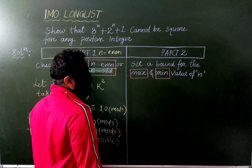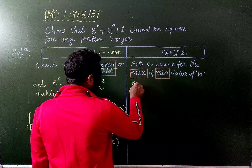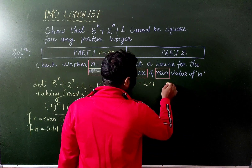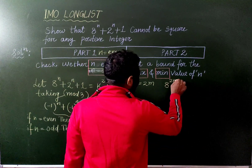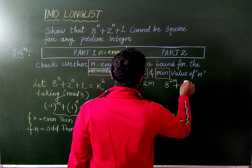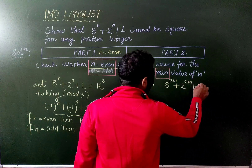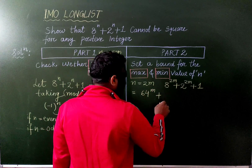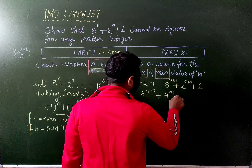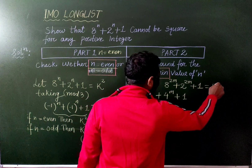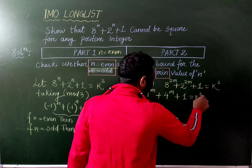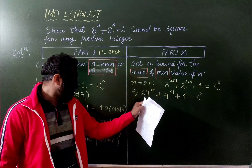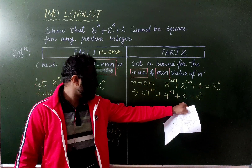Now for Part 2: since n is even, say n = 2m for some integer m. Then our expression becomes 8^(2m) + 2^(2m+1), which equals 64^m + 4^m + 1, and this equals k squared.